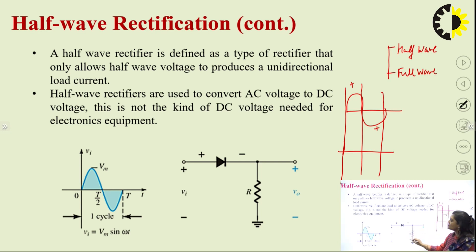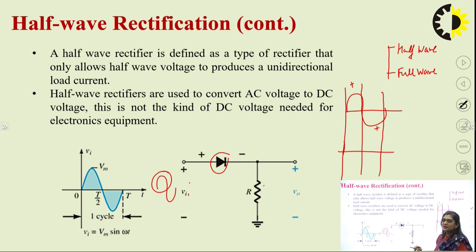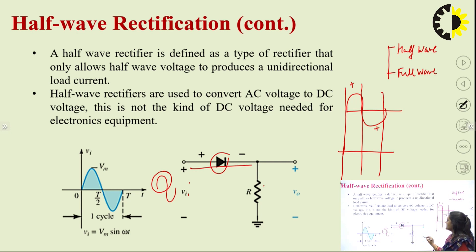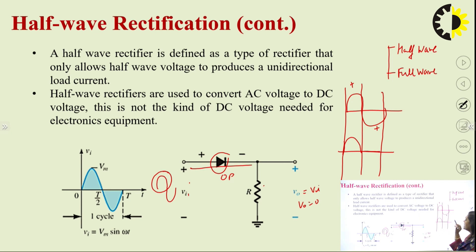The half wave rectifier has only one diode and one resistor. VI is the AC input signal we want to rectify. In the positive cycle, this diode will be forward biased because the P side is connected with the positive polarity, so the diode will be short circuit and output voltage V₀ equals VI. In the negative cycle, the diode will be in reverse bias, acting as an open circuit, and the output voltage will be 0.